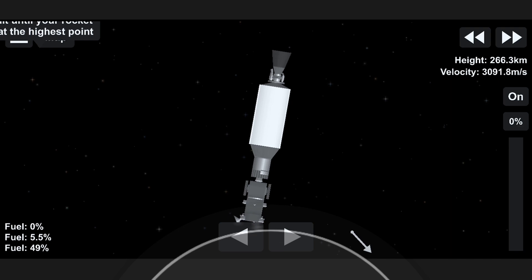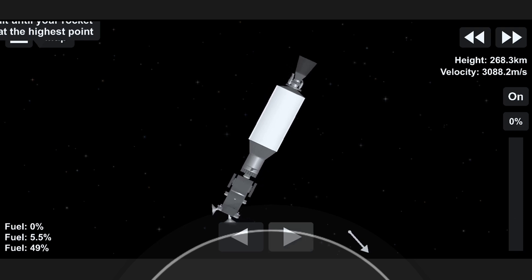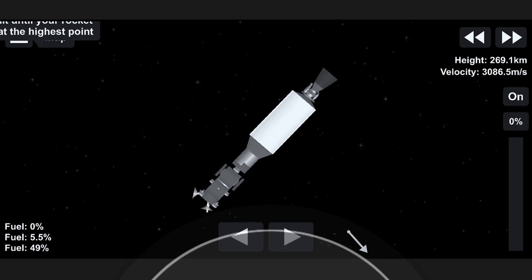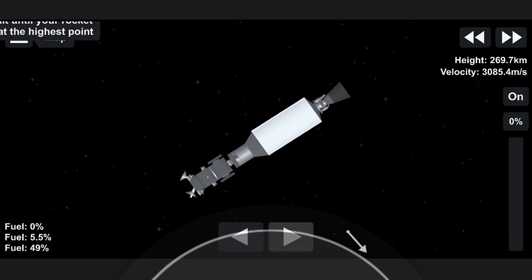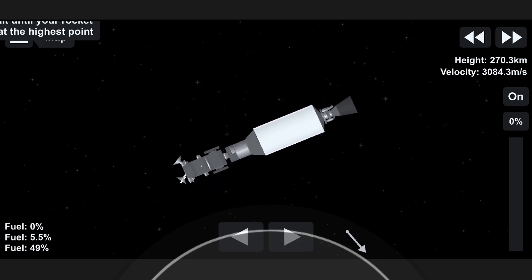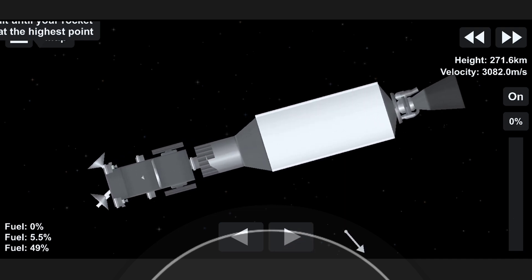And we have SECO. Sage Merlin vacuum engine has successfully had SECO-1. Nominal orbit insertion. And that is the other callout we were waiting to hear on, a good orbital insertion.